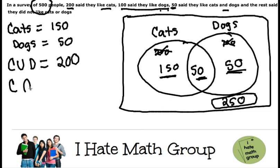What about the intersect between cats and dogs? Well, it's just this area right here, and that's going to be 50 people only.